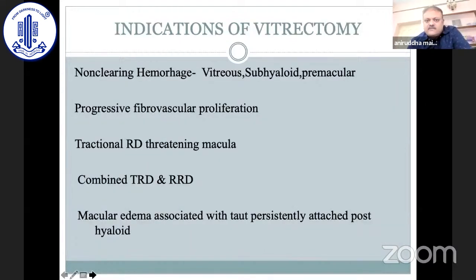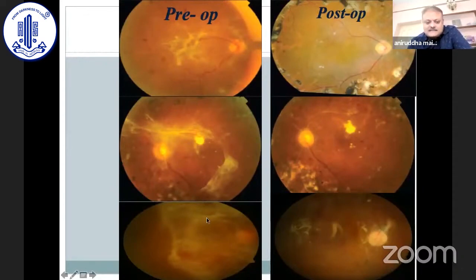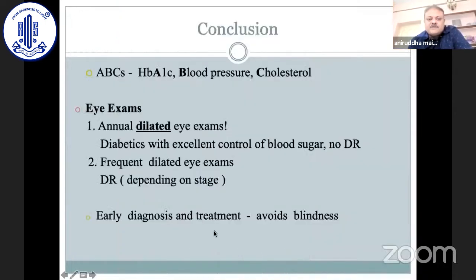Lastly, the indications for vitrectomy: vitreous hemorrhage not clearing, progressive fibrovascular proliferation, tractional retinal detachment threatening the macula, or a combined TRD with rhegmatogenous retinal detachment. The key point to emphasize is that the earlier we operate, the better the visual prognosis. With the latest instrumentation we do achieve good anatomical results, but if intervention is delayed, functional improvement is not as great.